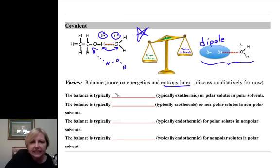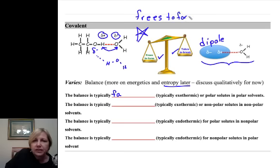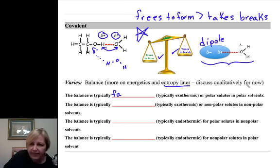Again, I mentioned that. So the balance is typically favorable. We're looking at that balance, that freeze to form versus takes to break, right? And if the freeze to form is greater than what it takes to break, it's a win, you make money so to speak. Now I'm simplifying this quite a bit, but it gives you a start of understanding the structural reason why things dissolve. The balance is favorable, typically at least somewhat exothermic, not always, but typically exothermic.